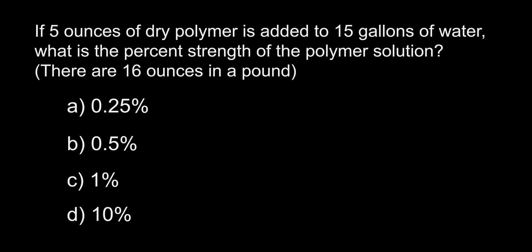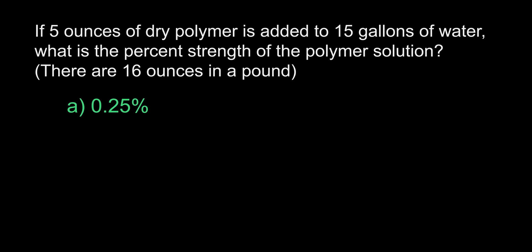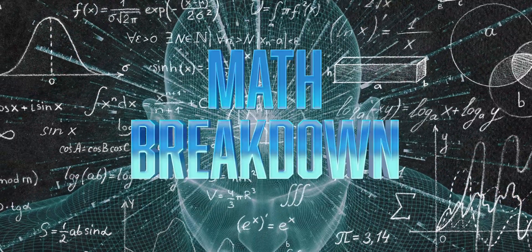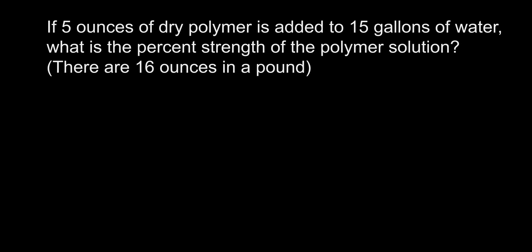If 5 ounces of dry polymer is added to 15 gallons of water, what is the percent strength of the polymer solution? There are 16 ounces in a pound. A. 0.25%, B. 0.5%, C. 1%, D. 10%. The answer is A, 0.25%. Hold on to your butts — it's time for a math breakdown. This question may seem intimidating, but it's actually quite easy.